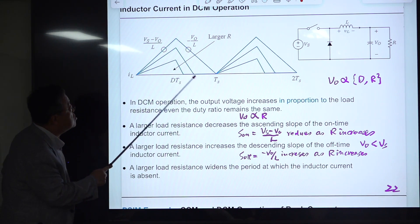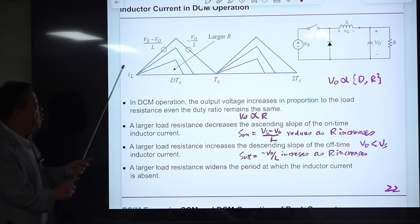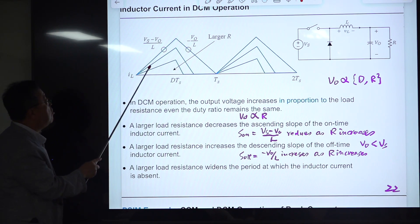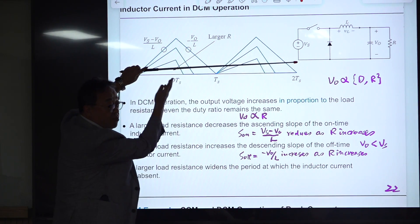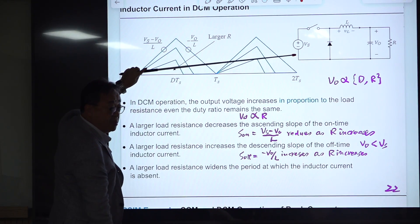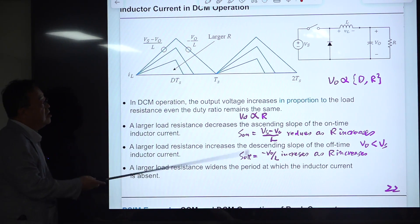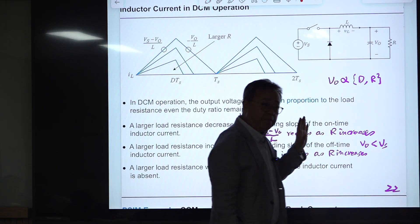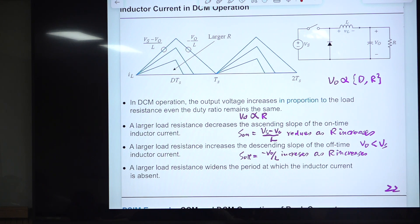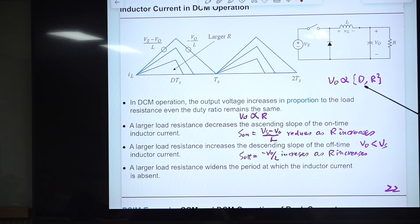The only way of reducing the average without going through negative current is just reducing the area of the triangle. The average of this area equals the average value of load current and inductor current. If D is fixed, output is fixed in CCM. But if the converter moves into DCM operation, output is proportional not only to D but also to R.